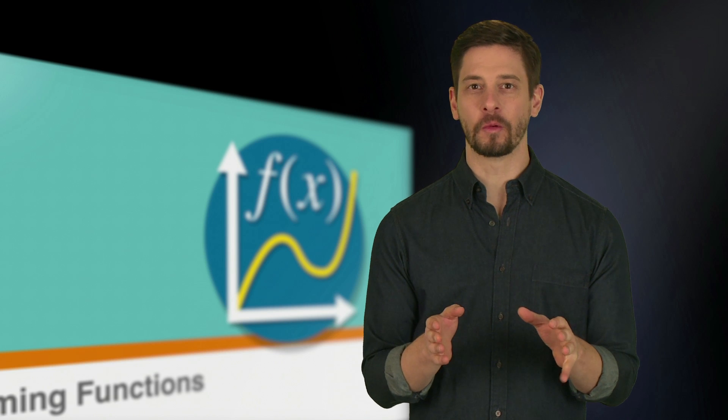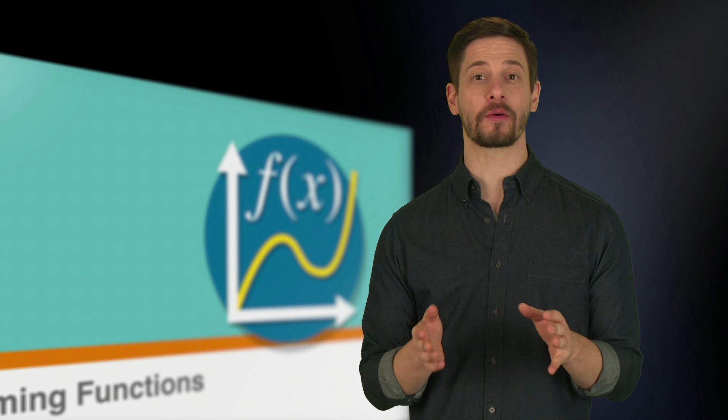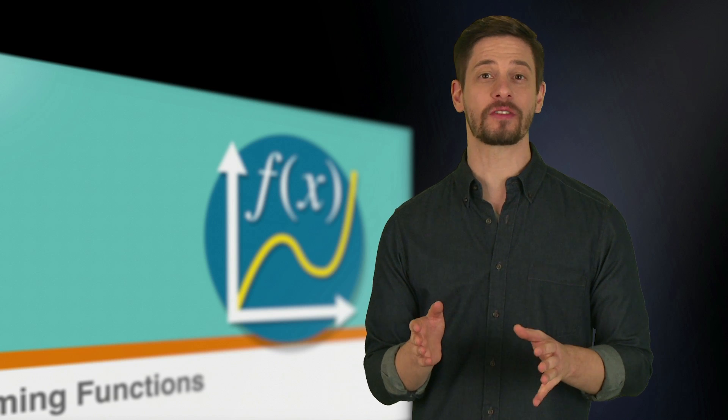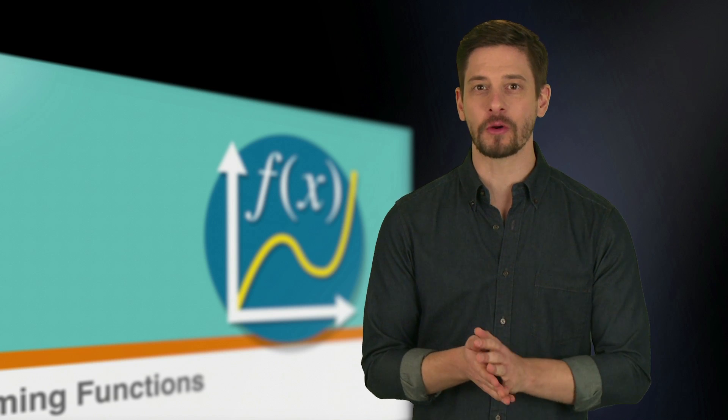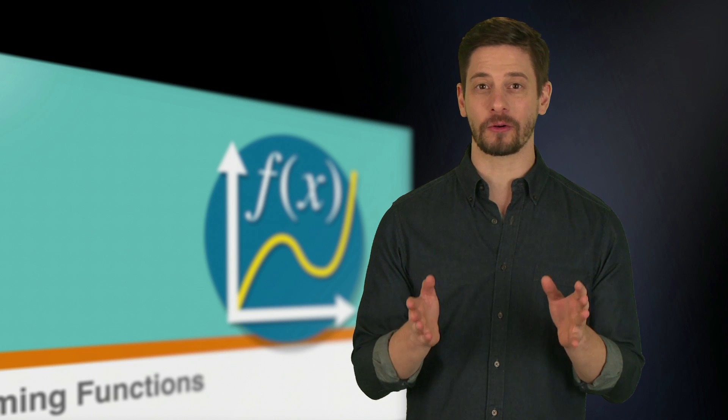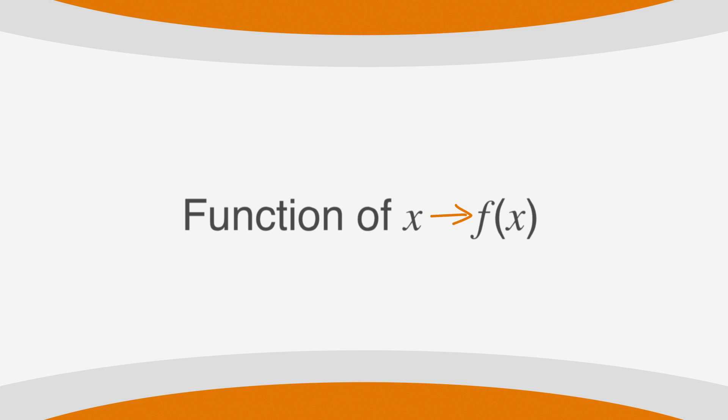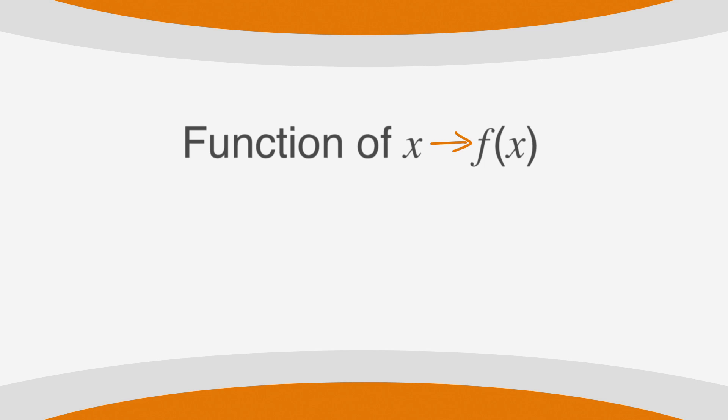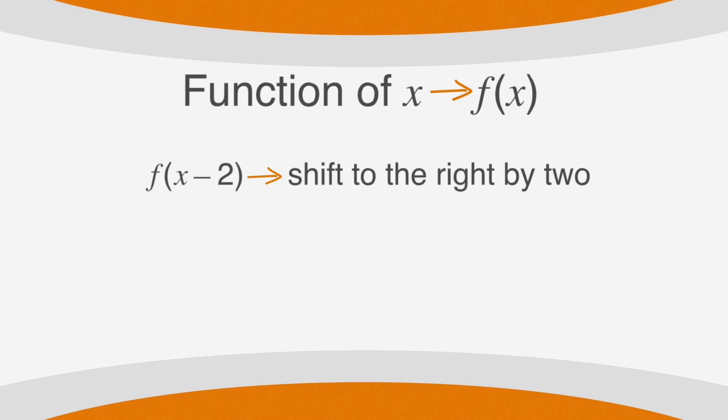If we look for a pattern, we'll notice that changes inside of the parentheses affect the x values of the function and shift the function horizontally. Also notice that they have a counterintuitive effect. Subtracting 2 inside the parentheses has the effect of shifting the function to the right by 2, and adding 2 inside the parentheses has the effect of shifting the function to the left by 2.